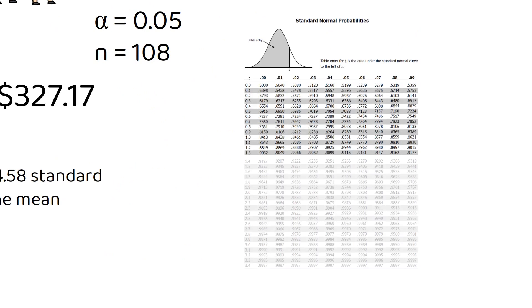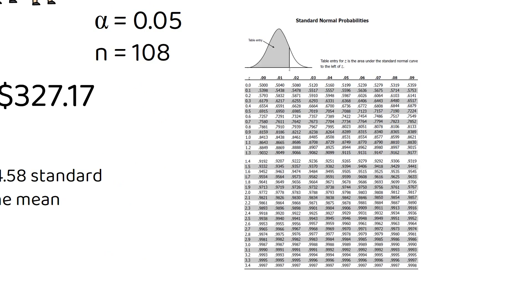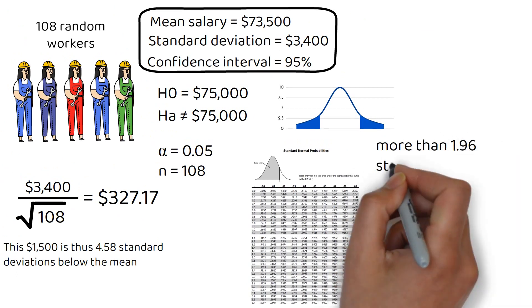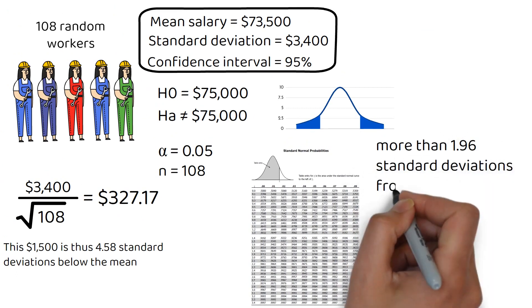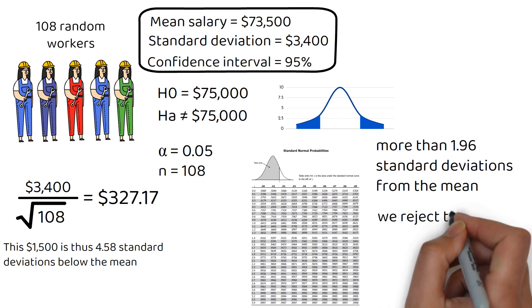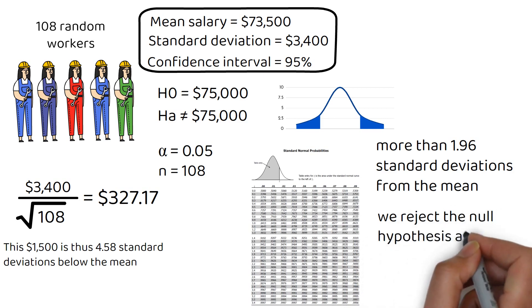Looking at the Z-table, we see that 95% confidence for a two-tailed test required more than 1.96 standard deviations from the mean. This exceeds that threshold by a lot, which means it falls into the rejection region. Since the test statistic 4.58 is far greater than the critical value 1.96, we reject the null hypothesis at the 5% level of significance.